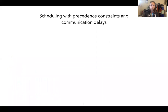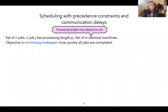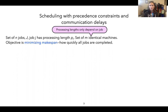A lot of you are familiar with scheduling, but maybe less so the model of precedence constraints or communication delays, so we'll take some time to set that up. We consider a set of n jobs denoted by j, where a job little j has processing length p sub j — the number of time steps it takes to complete a job — and we process these jobs on a set of m identical machines. The objective I'll be discussing today is minimizing make-span: how quickly can you schedule all the jobs so that they're all completed?